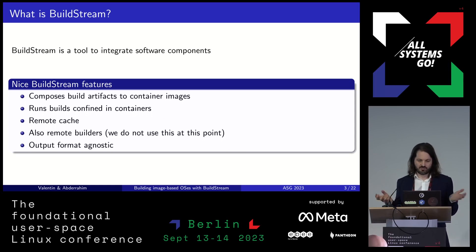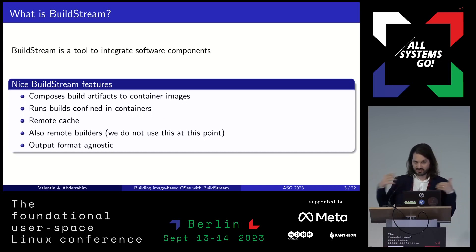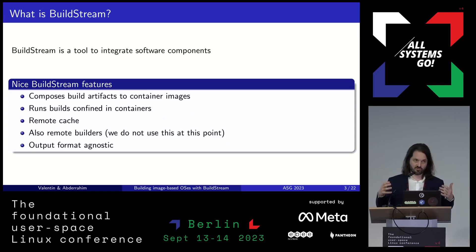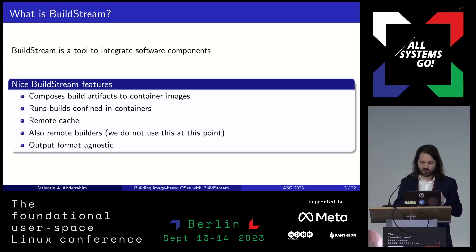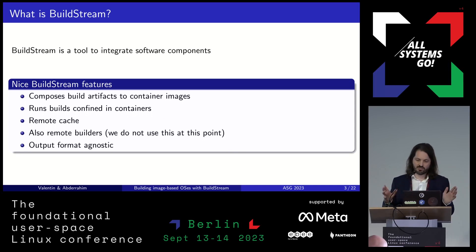Some interesting things with Buildstream: we have a remote cache, so we can have a server where we push all the builds, and if you try to build exactly the same thing, since it's reproducible, we just get the result directly, so it goes faster. There is a feature we don't use for GNOME OS, which is remote builders. You can also have a swarm of builders that can build different things at the same time, and you can also build lots of software on your machine at the same time with Buildstream, as long as you have enough memory.